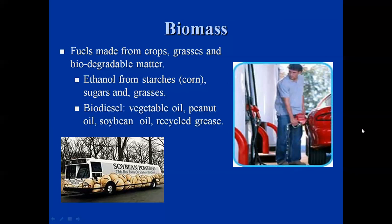Most of us are more familiar with this type of biomass — making fuel from crops, grasses, and biodegradable matter. One of the more well-known examples is making ethanol used as an additive to gasoline in our cars. The primary source is corn, but sugars and certain types of grasses can also be broken down into alcohol. On the biodiesel front, we can use vegetable oil, peanut oil, soybean oil, and recycled grease from restaurants. Once cleaned, you can burn any of these in an existing diesel-powered vehicle.